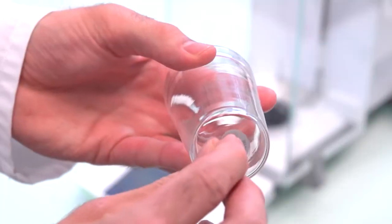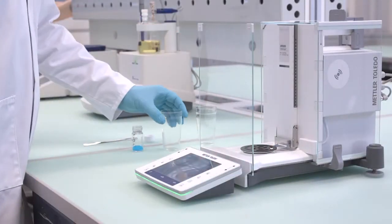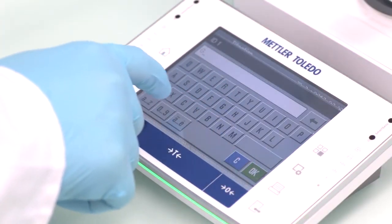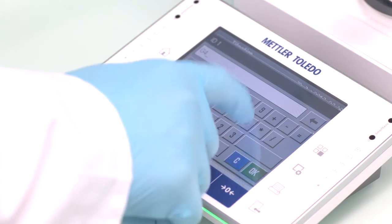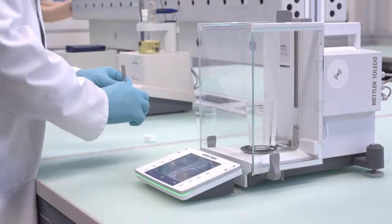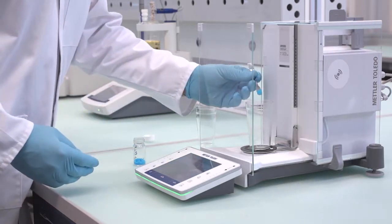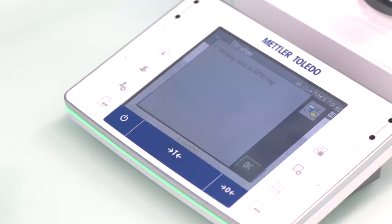Simply put the titration beaker with the smart tag on the balance. Enter all sample information and variables for the titration at the balance. Tare and weigh your sample and transfer it to the tag with the weight.